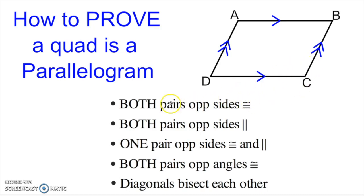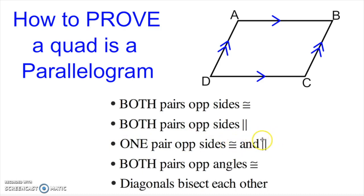One thing you can do is prove that both pairs of opposite sides are congruent. Another thing you can do is prove that both pairs of opposite sides are parallel — that one shouldn't be a surprise because that's the definition of a parallelogram. You could also prove that one pair of opposite sides is congruent and parallel, or both pairs of opposite angles congruent, or that the diagonals bisect each other.